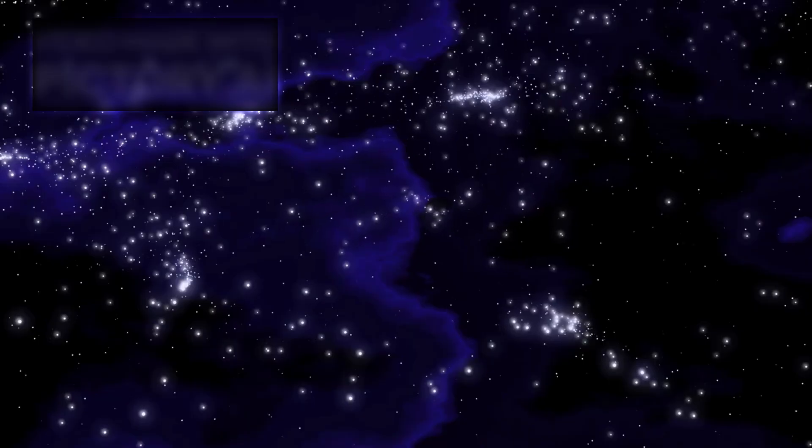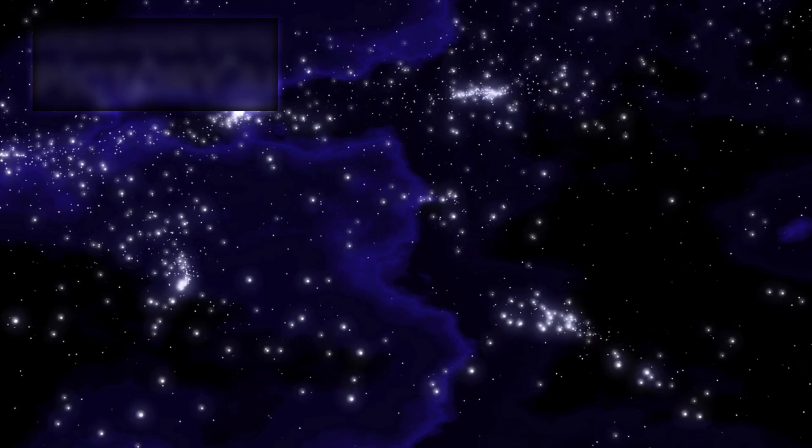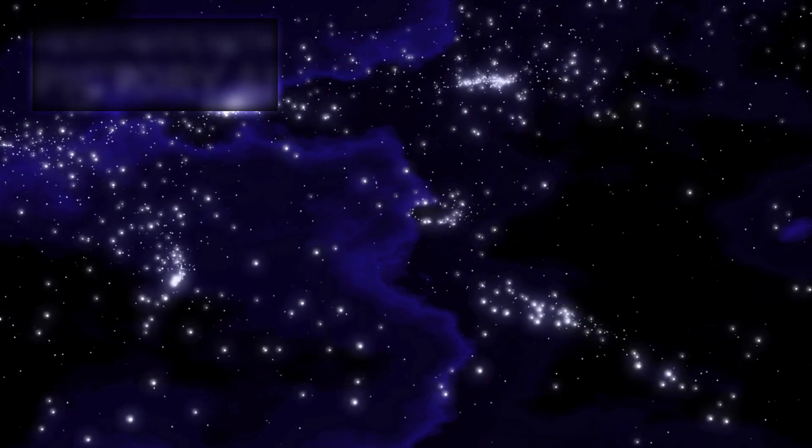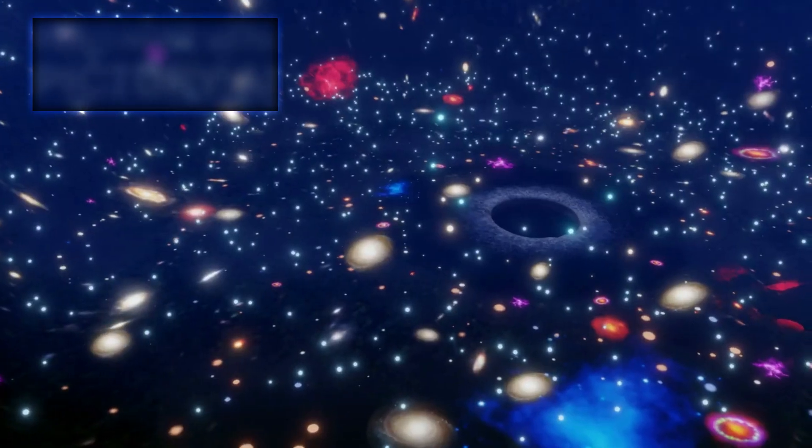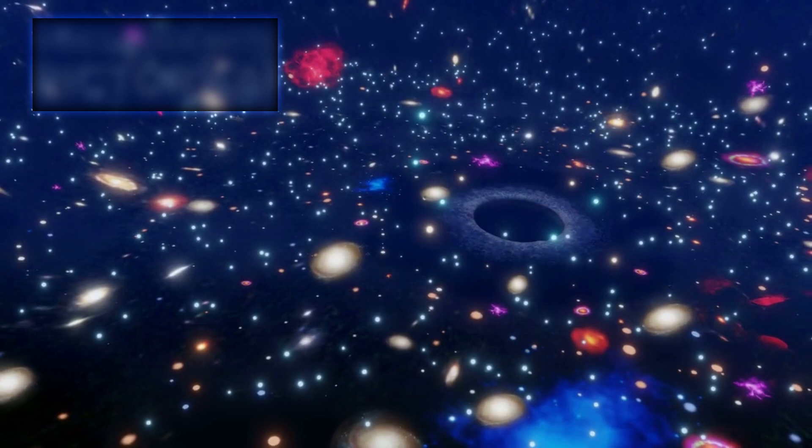Then came a breakthrough that brought the world face to face with one of these cosmic beasts. In 2019, the Event Horizon Telescope, EHT, a global network of radio telescopes, captured the first-ever image of a black hole's shadow. This historic photograph showed the supermassive black hole at the center of the M87 galaxy, some 55 million light-years away. The image revealed a glowing, donut-shaped ring of light encircling a pitch-black center, the silhouette of the event horizon. For the first time, humanity had visual proof of a black hole.